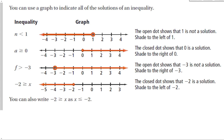We can graph all solutions to an inequality. For n < 1: the open dot shows it's not a solution — because it doesn't say or equal to — and we shade to the left, because less than goes left. For a ≥ 0: the closed dot shows 0 is a solution, and we shade to the right because we want bigger values. For f > -3: open circle again, not a solution, and shade to the right.